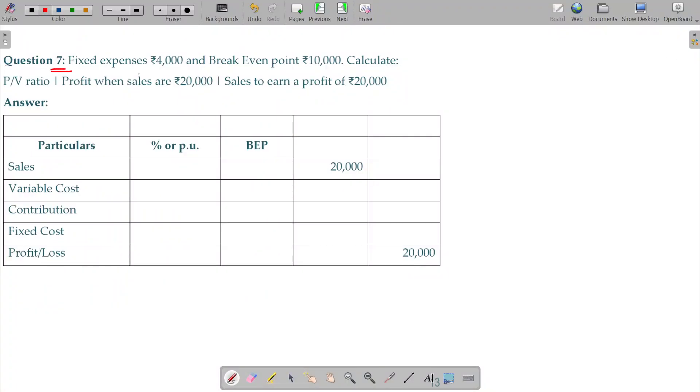Question number 7. Fixed expenses 4000, breakeven point 10000. So breakeven point 10000 rupees, fixed cost being 4000 rupees. Of course, we do not have profit at BP level.